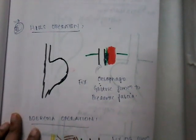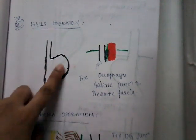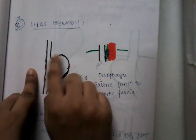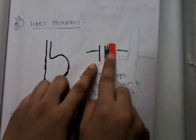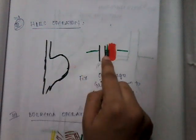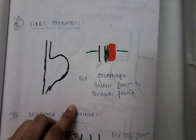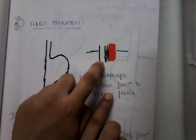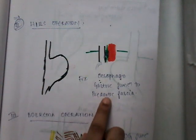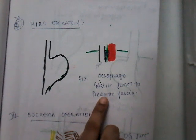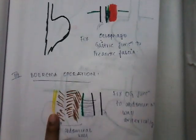Now let us discuss other surgeries other than fundoplication. One of them is Hill's operation. In Hill's operation, the gastroesophageal junction is fixed to the pre-aortic fascia, which is posterior to the esophagus — between the esophagus and the aorta there is pre-aortic fascia. The esophagus is sutured or fixed to this pre-aortic fascia. Because of fixing the esophagus to the pre-aortic fascia, the esophagus becomes competent, thus decreasing the reflux of stomach contents.